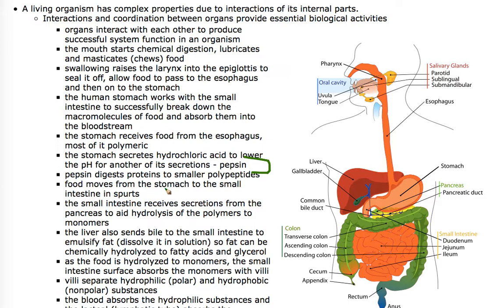From there, food moves from the stomach to the small intestine in spurts. The small intestine receives secretions from the pancreas to aid in the hydrolysis of polymers and neutralize stomach acid. The liver sends bile to the small intestine to emulsify fat. The liver drains bile to the gallbladder, and the gallbladder squirts it on the secretions as they shoot from the stomach into the small intestine. Bile helps to dissolve fat in solution so that the lipids can be hydrolyzed into fatty acids and glycerol.